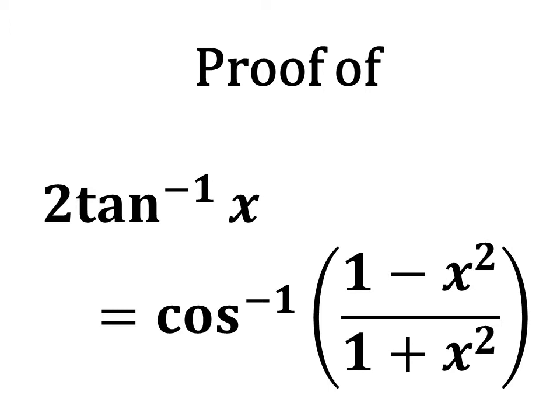It can also be said as: 2 times arctangent of x is equal to arccosine of 1 minus square of x upon 1 plus square of x, as inverse of tangent is also known as arctangent and inverse of cosine is also known as arccosine.